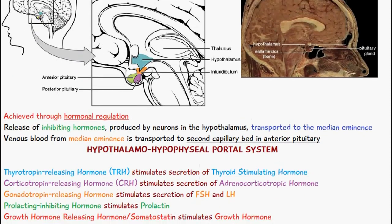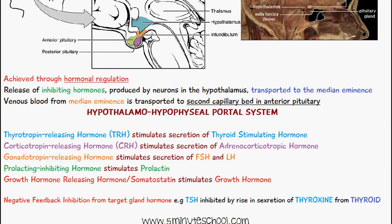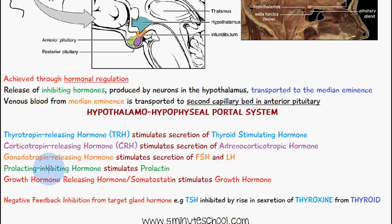We'll just talk about them briefly. We have thyrotropin-releasing hormone, which stimulates the secretion of thyroid-stimulating hormone. We have corticotropin-releasing hormone, which stimulates the secretion of adrenocorticotropic hormone. We have gonadotropin-releasing hormone, which stimulates the secretion of follicle-stimulating hormone and luteinizing hormone. We have prolactin inhibiting hormone, which inhibits prolactin. We have growth hormone-releasing hormone, and somatostatin, which regulates growth hormone.